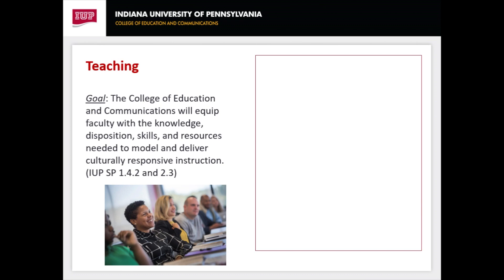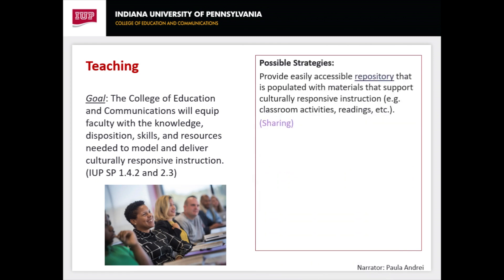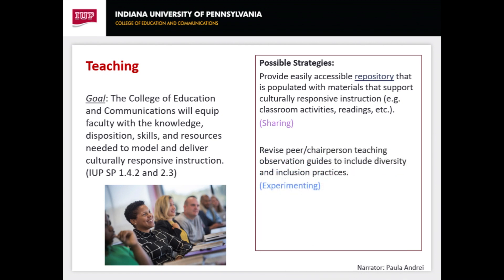As part of the development process, a goal and possible strategies were developed for each dimension, providing focus and guidance as the committee begins to implement the plan. Consideration of the IUP strategic plan was also used when developing each goal and is referenced at the end of the goal statement. This slide takes a closer look at the teaching dimension and focuses on how the college will help equip faculty with the knowledge, disposition, skills, and resources needed to model and deliver culturally responsive instruction. The first strategy comes from the sharing cycle and includes the use of a repository populated with materials that support culturally responsive instruction. The second possible strategy comes from the experimenting cycle and impacts the peer chairperson teaching observation guides so that they include diversity and inclusion practices.